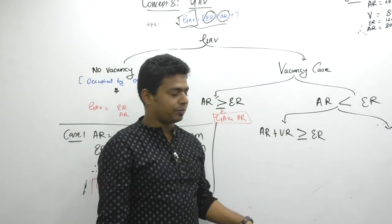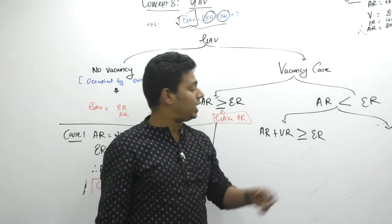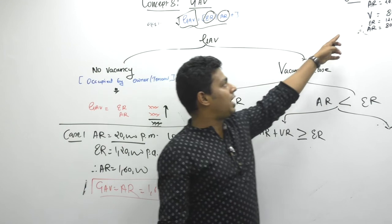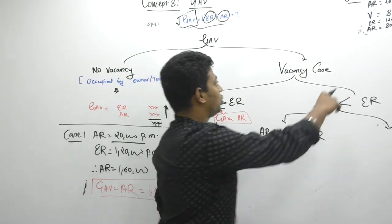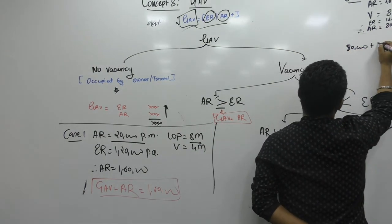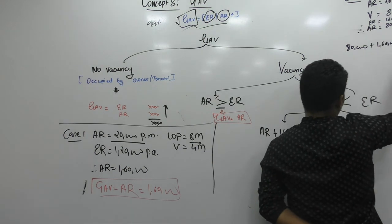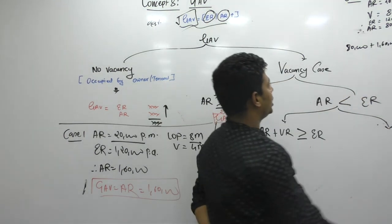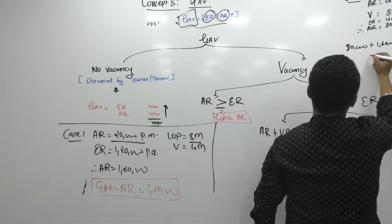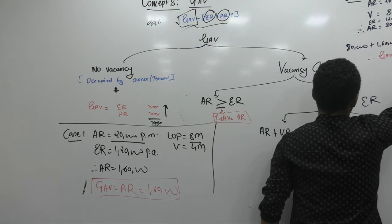If the property was let out for the whole 12 months, the number would be 2,40,000 — which is more than 1,20,000. Here: actual rent is 80,000, plus vacancy rent for 8 months is 1,60,000. Total is 2,40,000. Is it more than expected rent of 1,20,000? Yes. Therefore the government says: do not pay tax on expected rent. Pay tax on GAV equal to actual rent, which is 80,000.